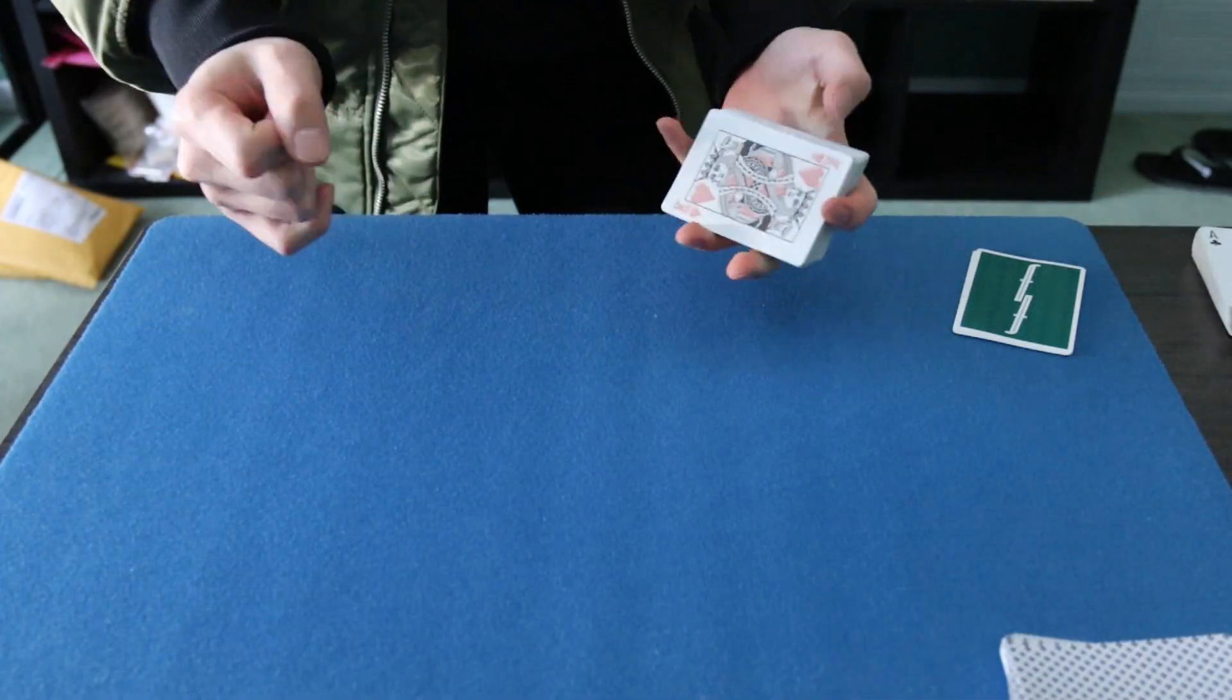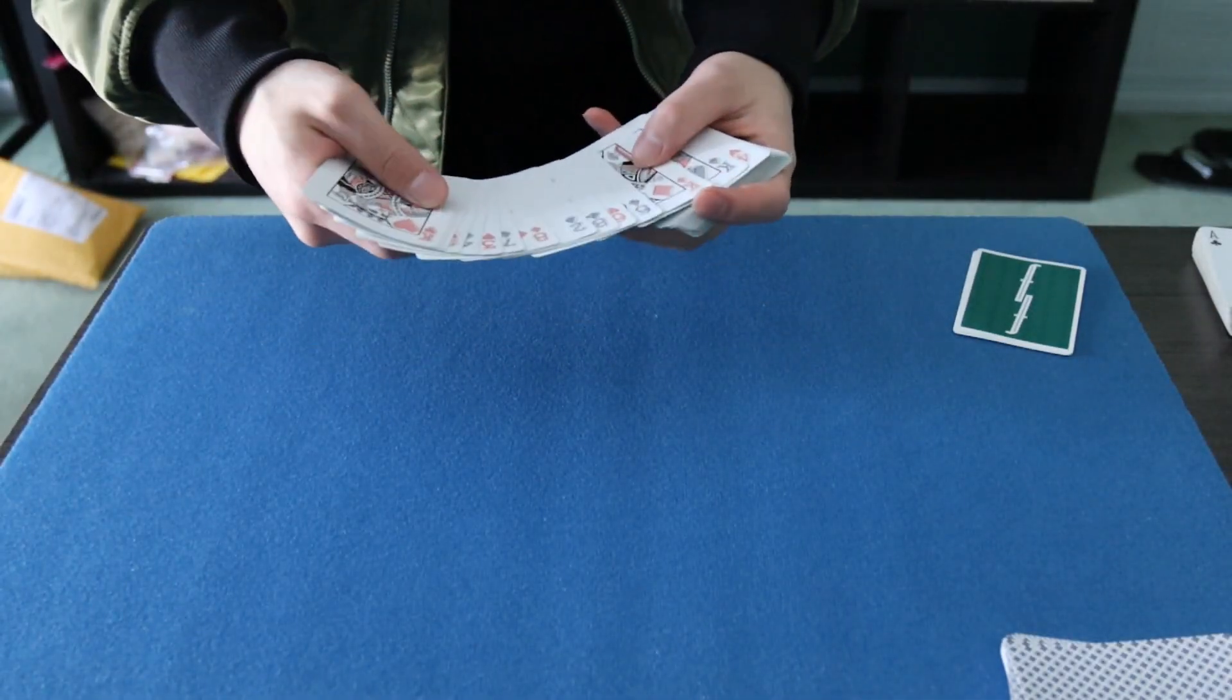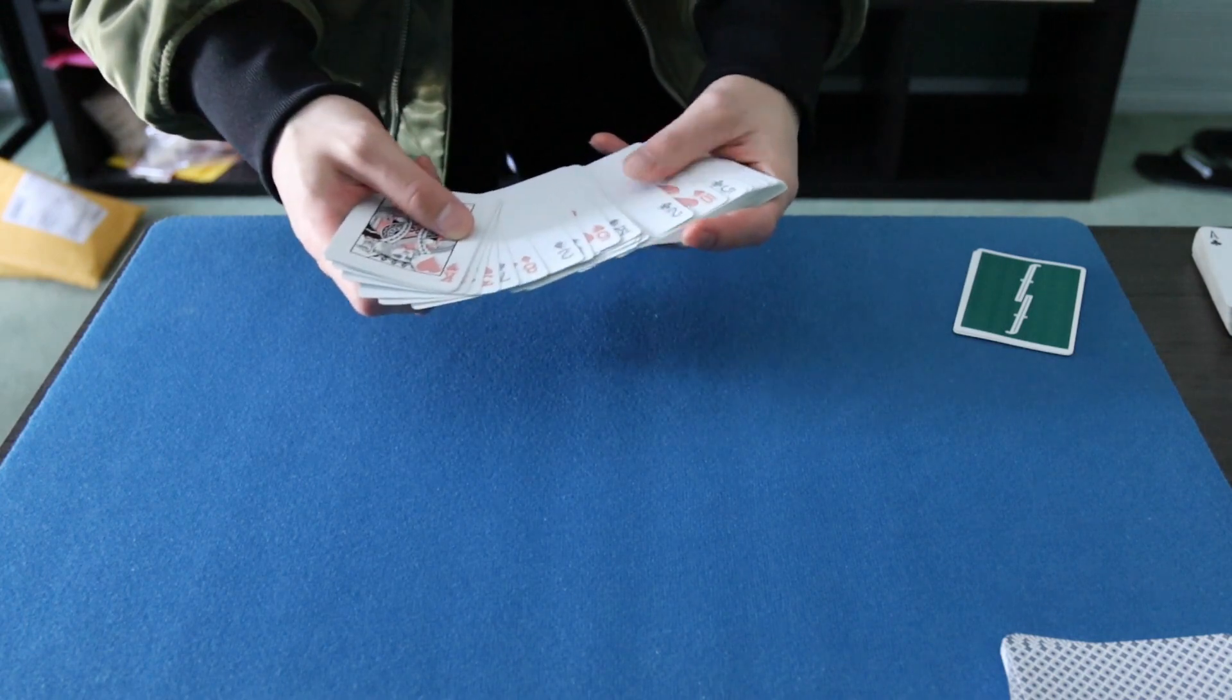All right, so to begin, I would like to have two cards selected. For example, the King of Diamonds, maybe, and the Ten of Hearts.